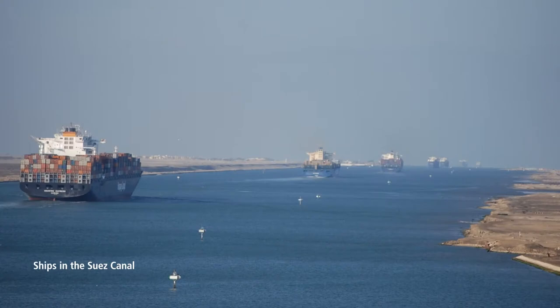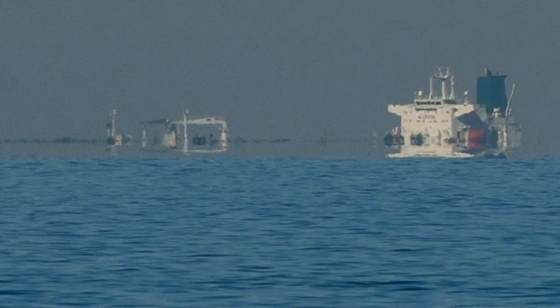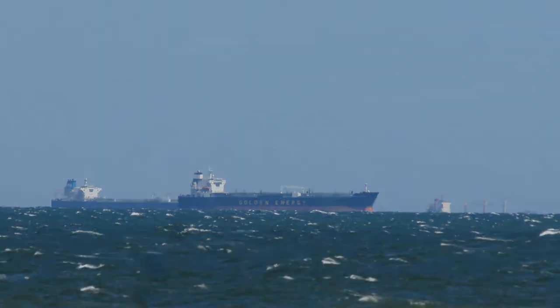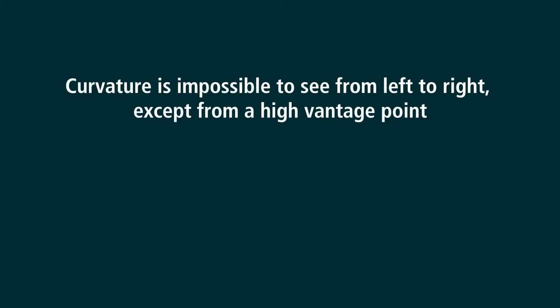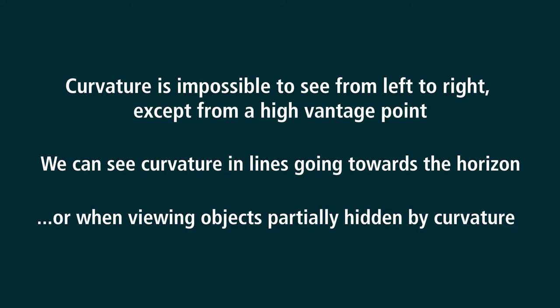Can you see the curvature in this image of the Suez Canal? Or in this image? Or in this one, also showing an excellent mirage? Or in this one, where we happen to have the actual distances to the ships? Curvature is impossible to see from left to right except from a high vantage point. We can see curvature in lines going towards the horizon, or when viewing objects partially hidden by curvature.